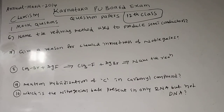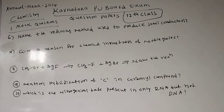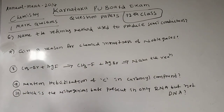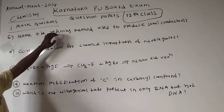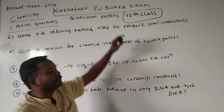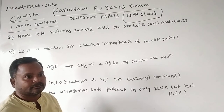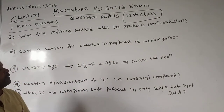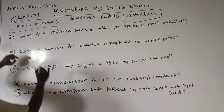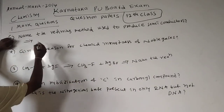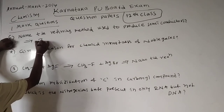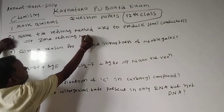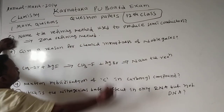These are the five questions. In continuation, we will see some more five questions. The next question: name the refining method used to produce semiconductors. This is one of the important methods in the chapter on general principles. The answer is zone refining method.